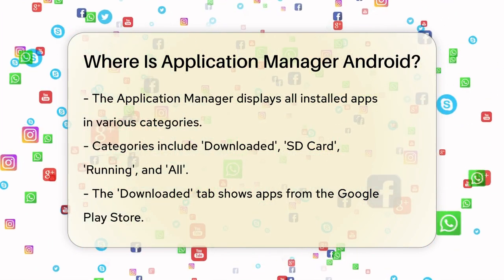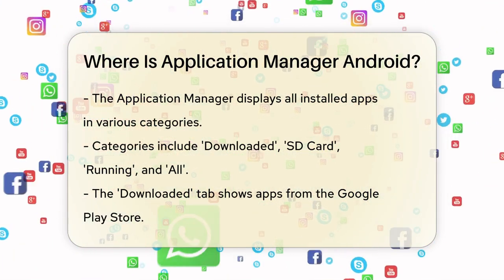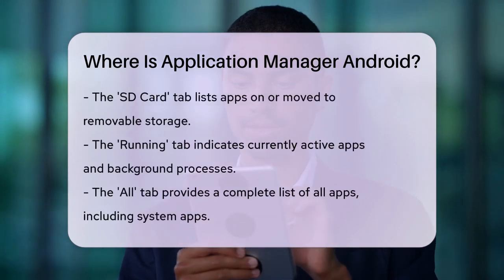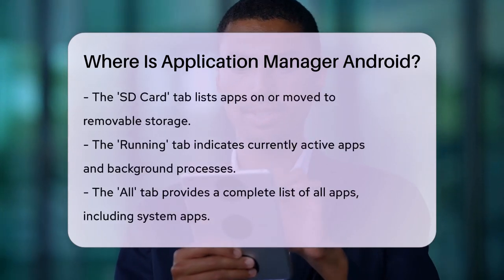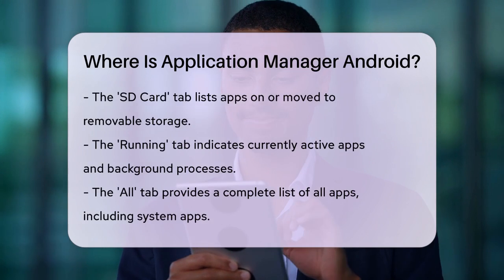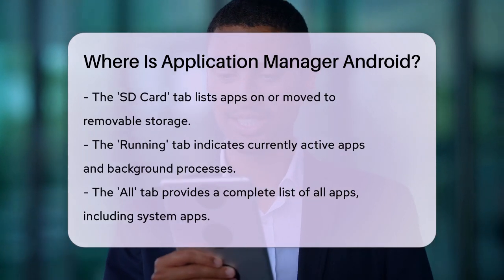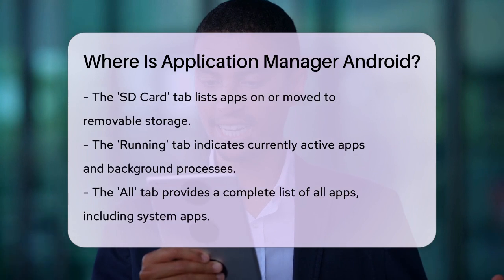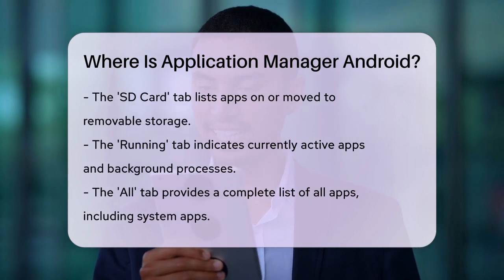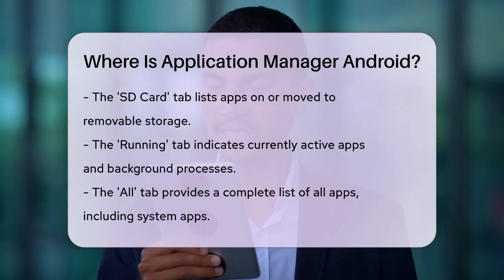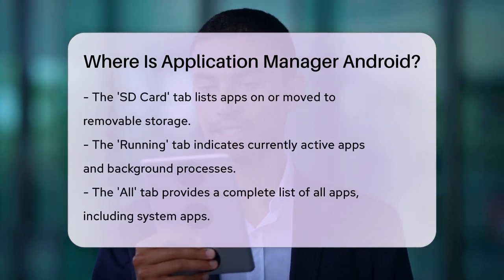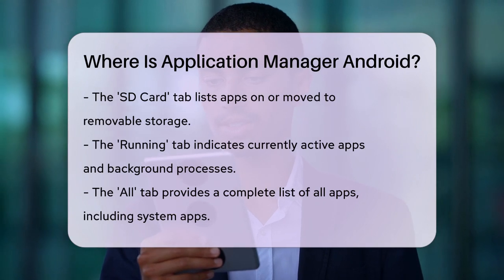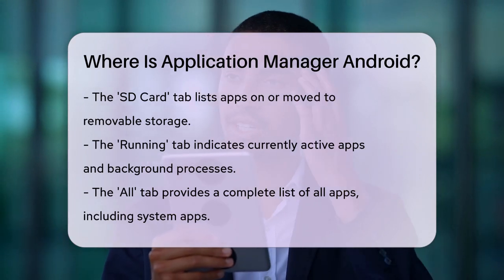The Downloaded tab lists all the apps you've downloaded from the Google Play Store. The SD Card tab shows apps installed on or transferred to your removable storage, like a microSD card. The Running tab displays apps that are currently active on your device, including services and other background processes. Finally, the All tab lists every single app on your device, including system apps and services.